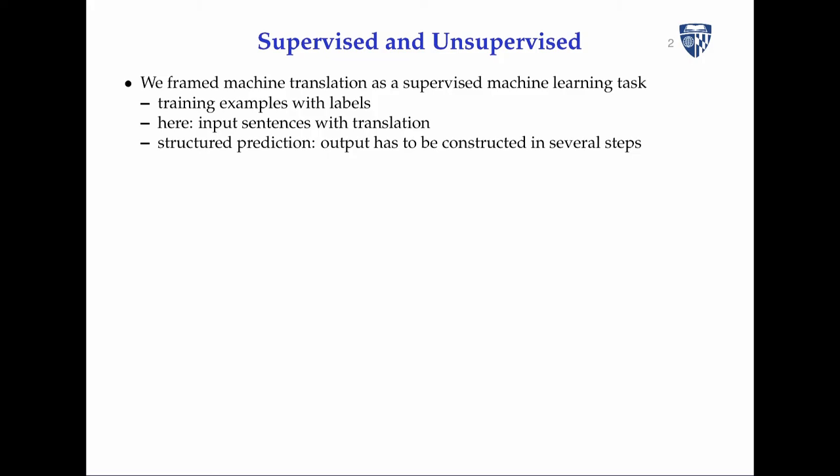The way we frame machine translation is as a supervised machine learning task. We actually have training examples with labels, meaning we have input sentences as our input with the translation as the output. It's a bit more complicated than a lot of supervised learning tasks because the output is not just a simple class to predict, but an output that has to be constructed in several steps. There's the additional problem of machine translation having many correct and acceptable translations while our training translation is only one instance.